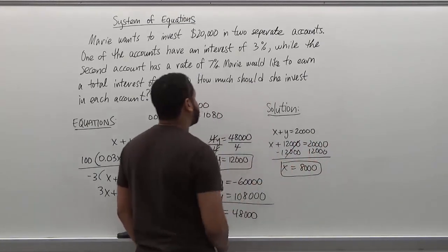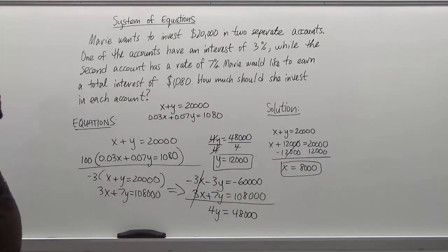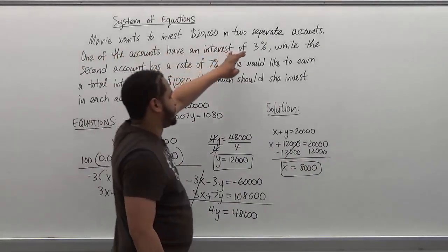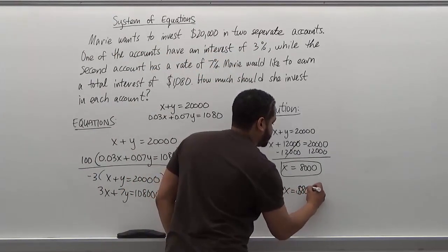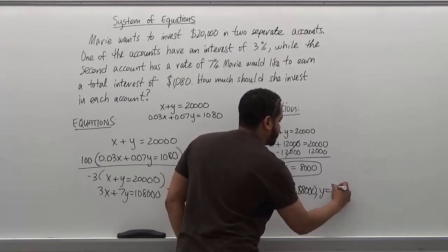So we have the amounts of each account. Account x is the first account that's invested in the amount. Equivalent at 3%, x is equivalent to 8,000. And the y is equivalent to 12,000.